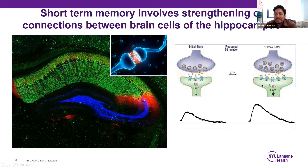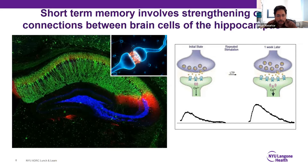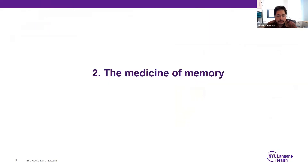There's a lot of research on how these connections are formed, strengthened, and weakened — all important for learning and memory. It involves a series of chemical reactions: proteins, calcium, and electrical conduction between brain cells. Nobel prizes have been awarded for this research, but we're still trying to sort out exactly what doesn't happen correctly when someone has a memory problem.